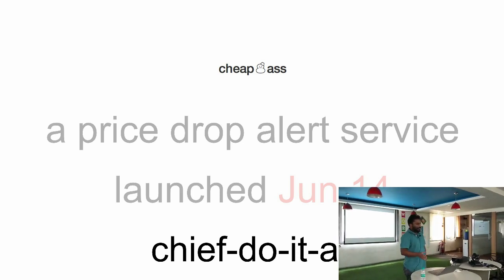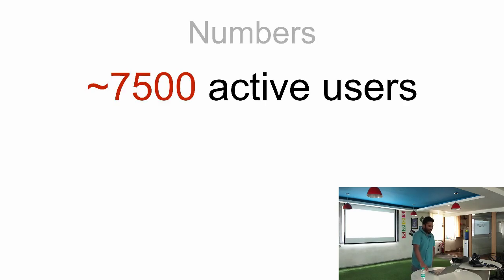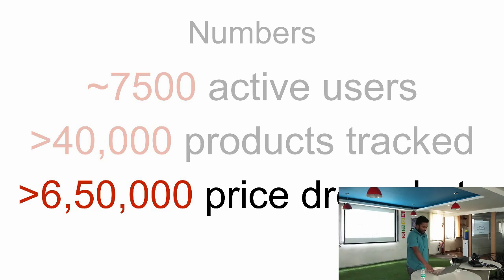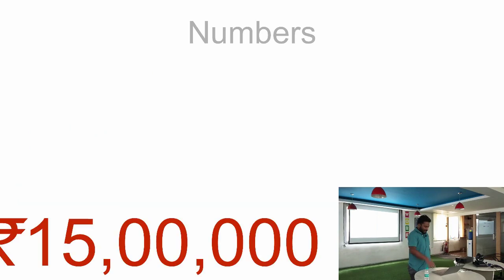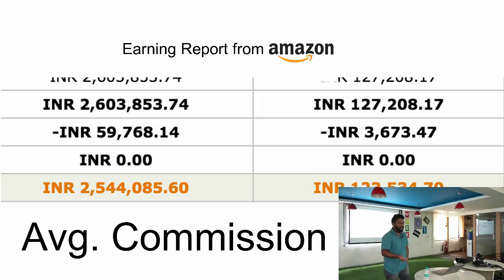To give you a brief idea about the scale at which CheapAss was operating before it shut down: it served about 7,500 active users at its peak, who tracked approximately 40,000 products. The system sent more than six and a half lakh price drop alerts, and it helped people save more than 15 lakh rupees. The product was self-sustaining — it made money from commissions, and that money went back into running the service.